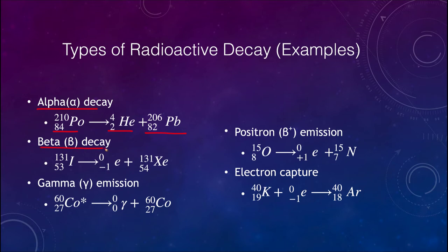For beta decay, iodine-131 decays to xenon-131. We are giving off an electron with a negative-one charge, so the mass stays the same at 131, but the atomic number increases from 53 to 54. So 53 equals 54 plus negative one, and we have balanced both charges and masses.